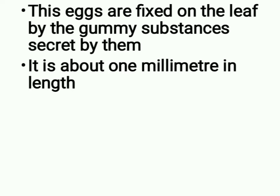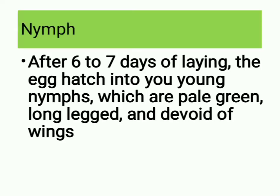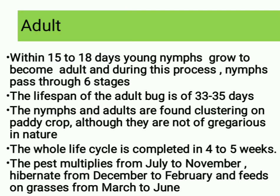Nymph: after 6 to 7 days of laying, the eggs hatch into young nymphs, which are pale green, long-legged and devoid of wings. Adult: within 15 to 18 days, young nymphs grow to become adults; during this process nymphs pass through 6 stages.